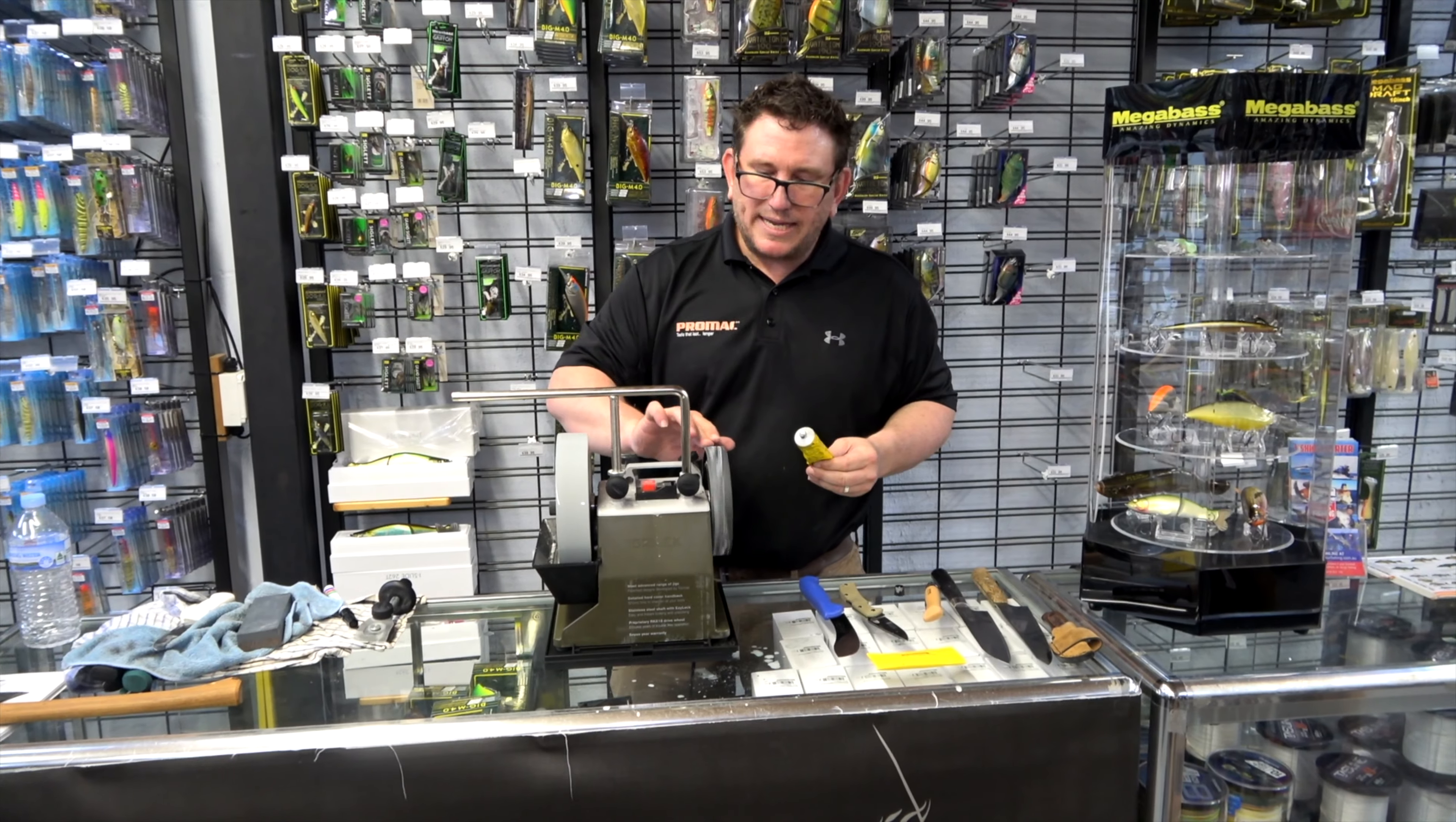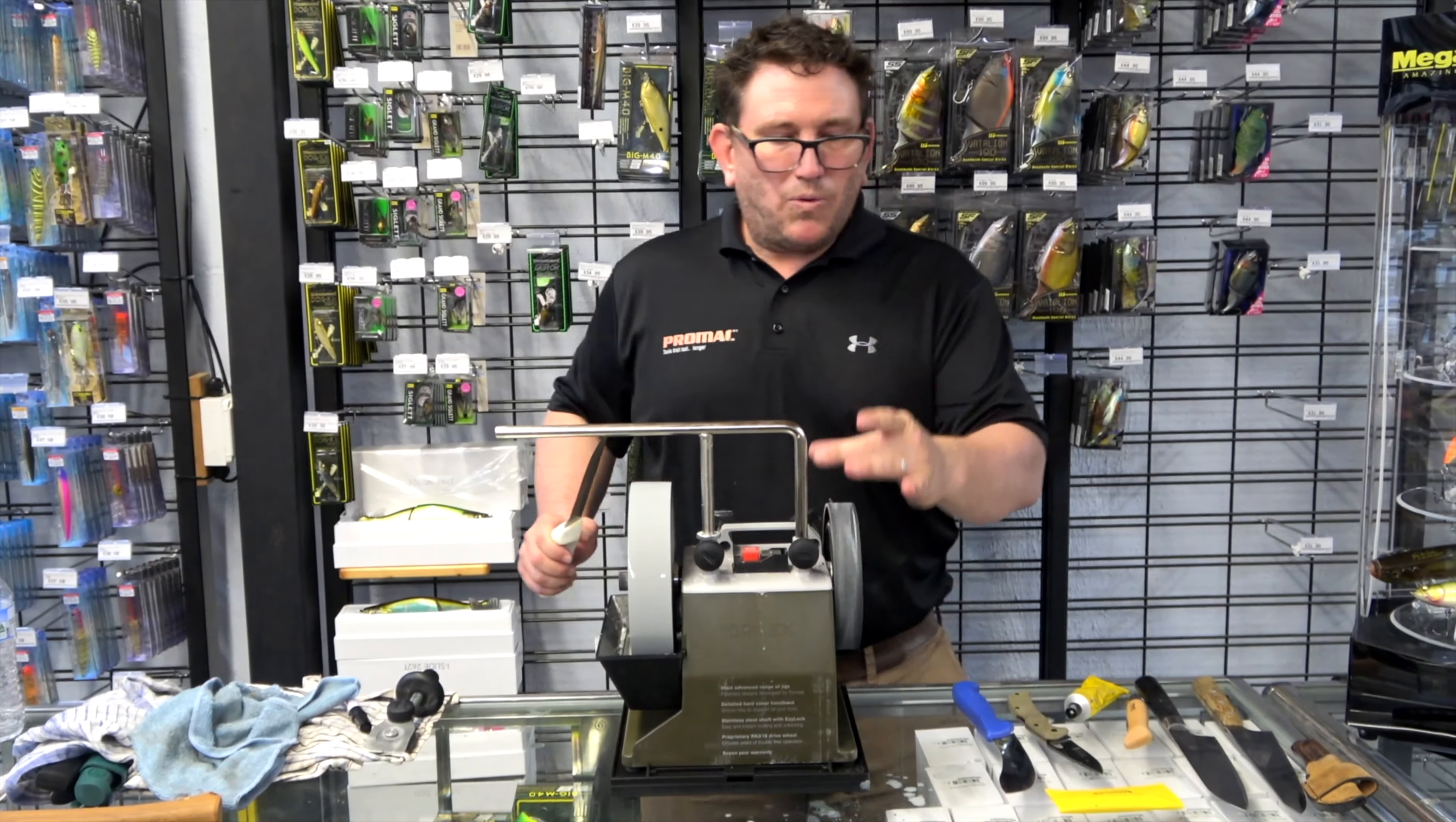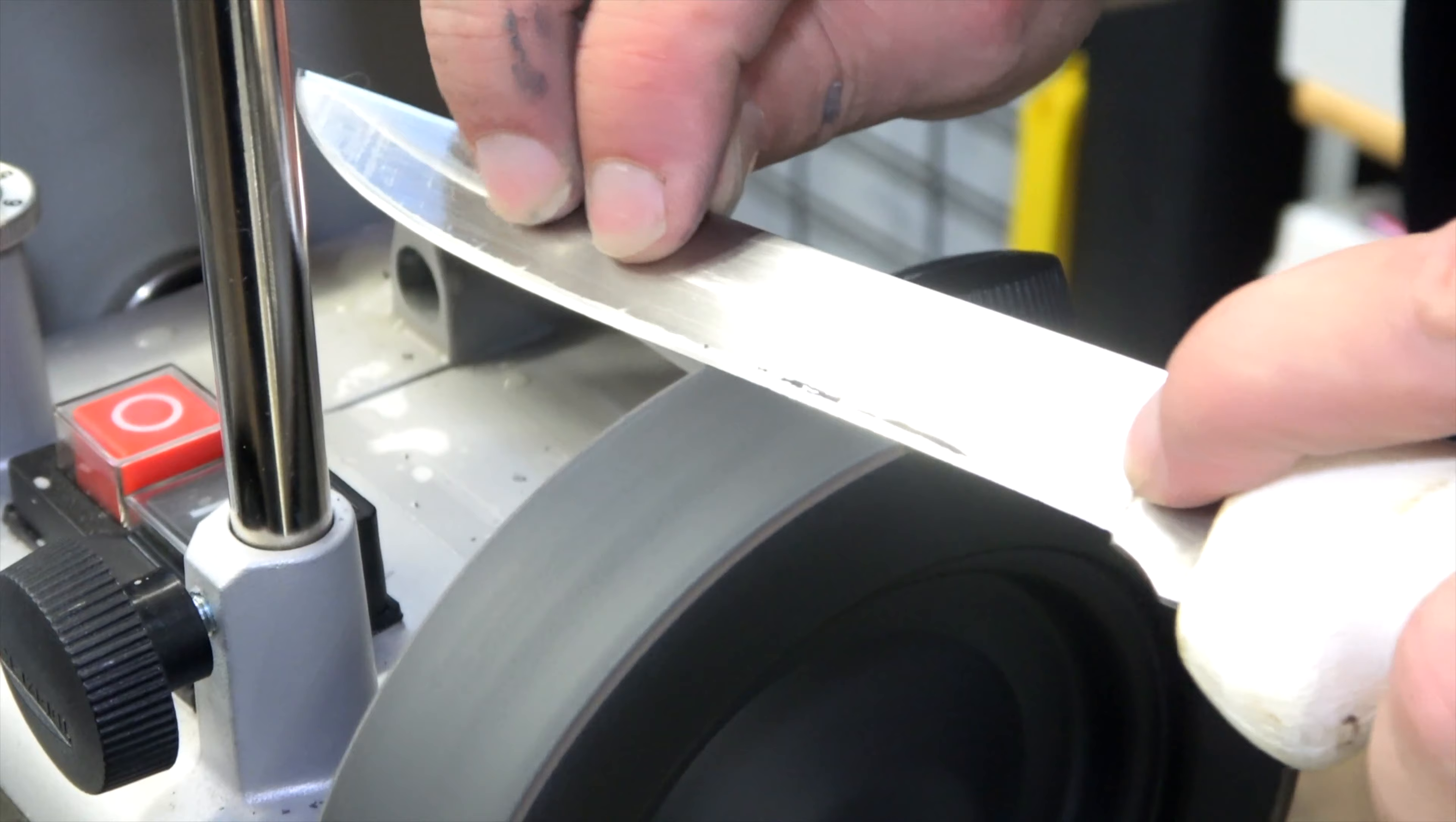Once again, you'll only have to apply the honing paste every 10 or so sharpens. We're going to be working off the top of the leather strop here, because it's going to be the flattest part of the wheel. And we're just going to tilt the knife until you see the little honing paste kicking up over the edge.